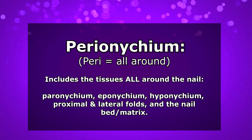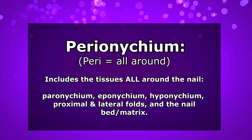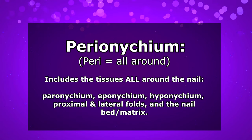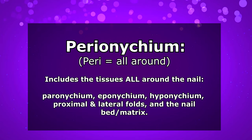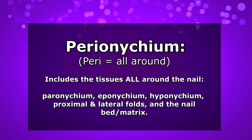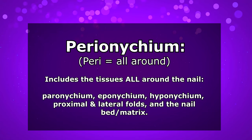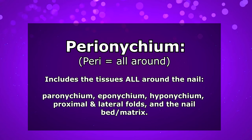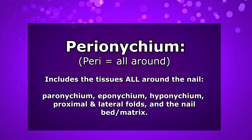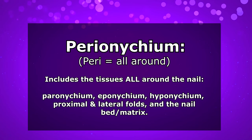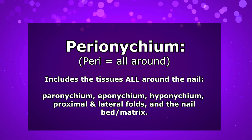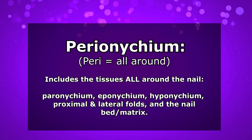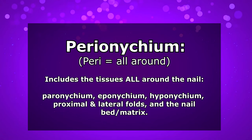And finally, we have the perionychium. 'Peri' basically means 'all around,' so the perionychium includes the paronychium, the eponychium, the hyponychium, the lateral and proximal folds, and the nail bed and matrix.